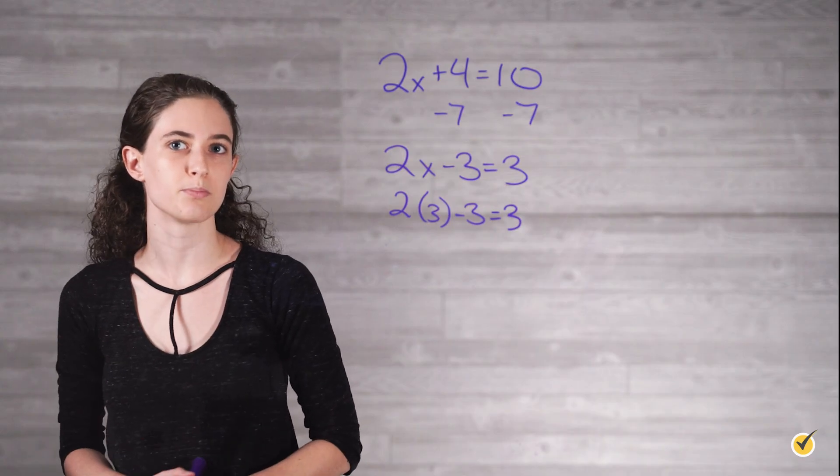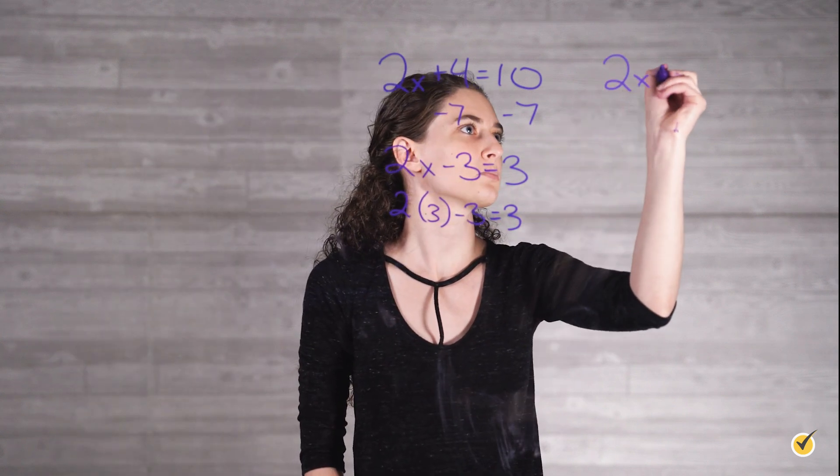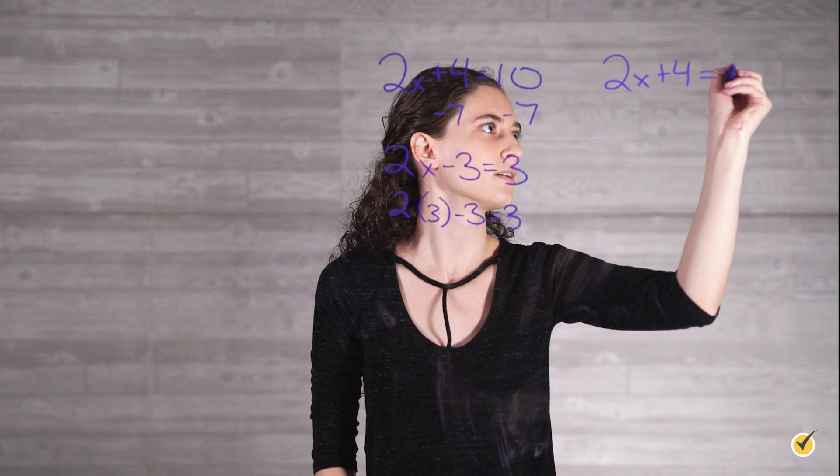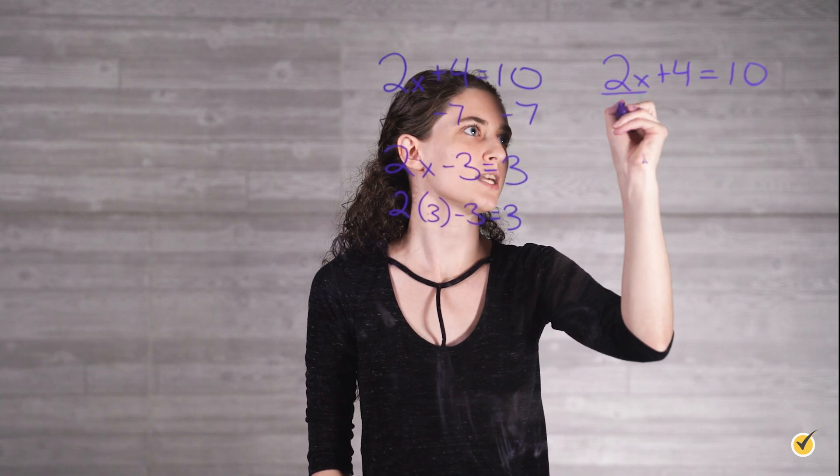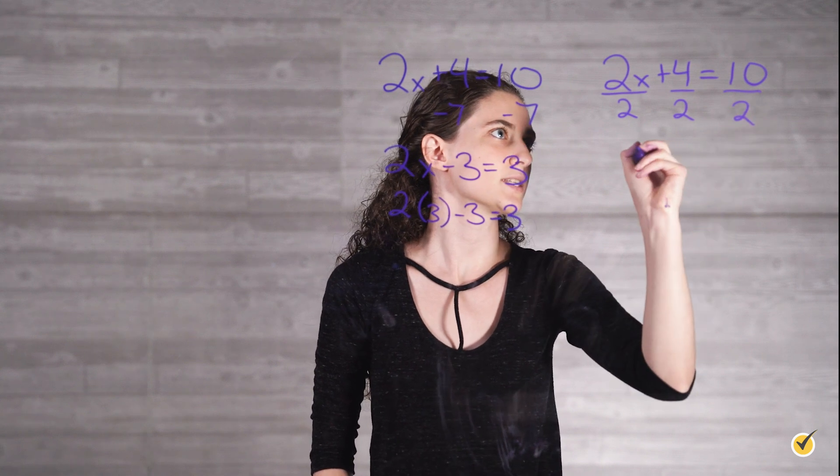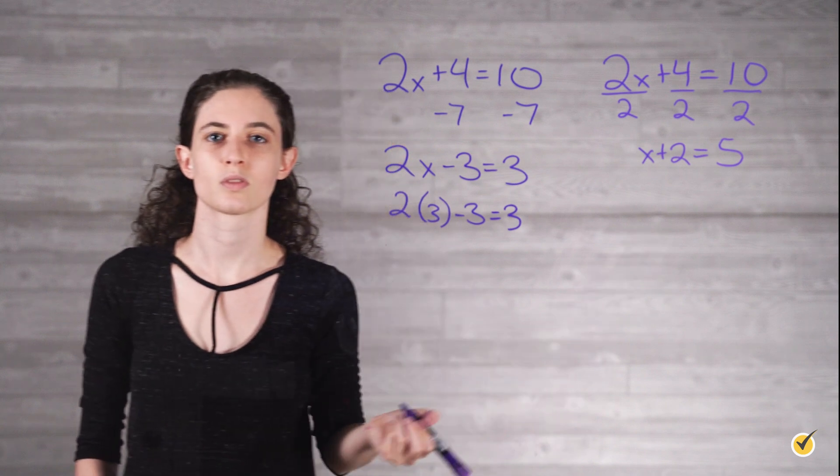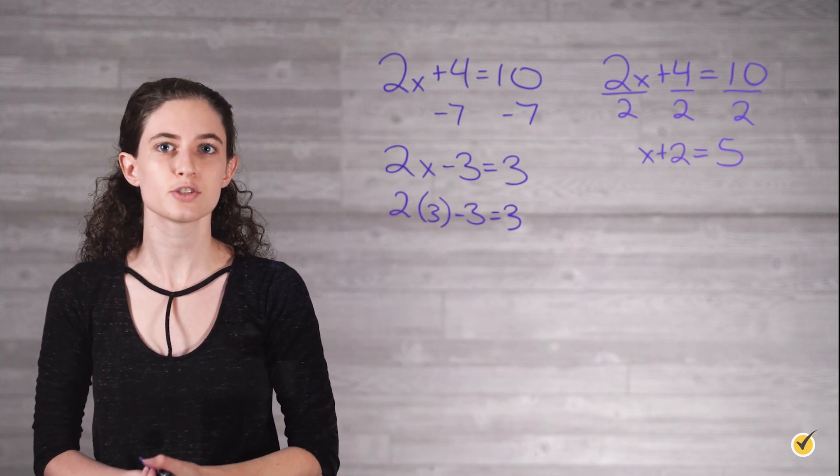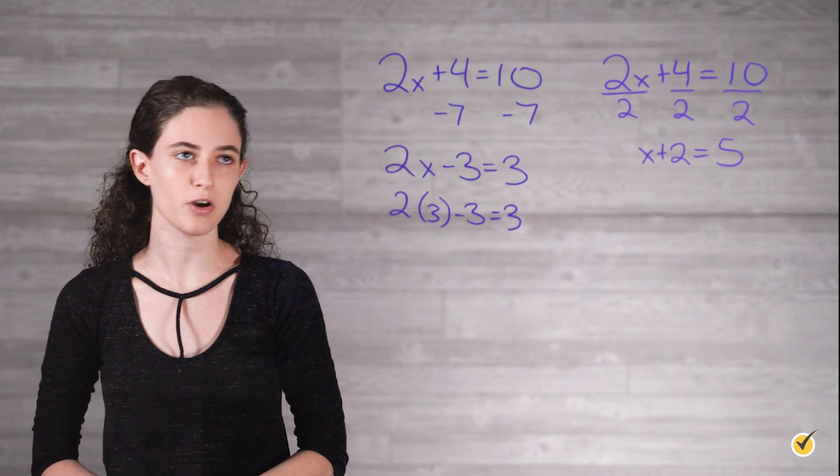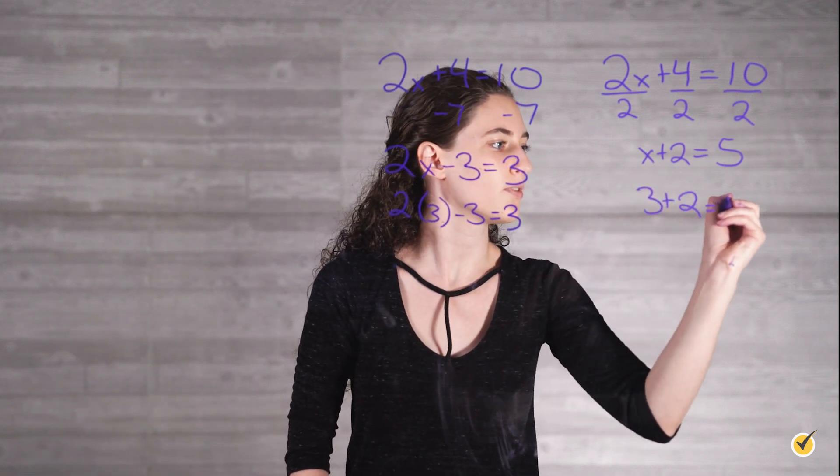Or, we can divide all the terms on both sides by 2. So we have our original again, 2x plus 4 equals 10. And if we divide each part by 2, that gives us x plus 2 equals 5. Again, when x equals 3, the statement is true and all other values make it false. 3 plus 2 equals 5.